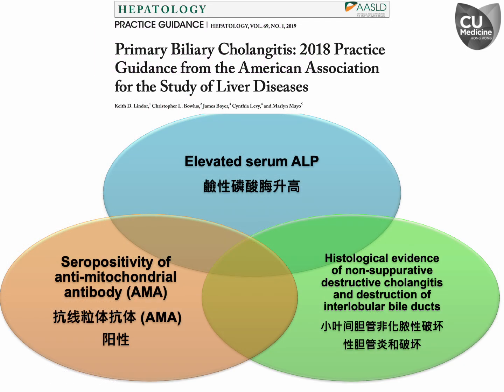Let's briefly discuss the diagnosis of primary biliary cholangiitis. According to the American Association for the Study of Liver Diseases (AASLD), at least two of the following three criteria must be satisfied: elevated alkaline phosphatase levels, seropositivity for antimitochondrial antibodies (AMA), and histological evidence of chronic non-suppurative destructive cholangiitis with interlobular bile duct destruction.